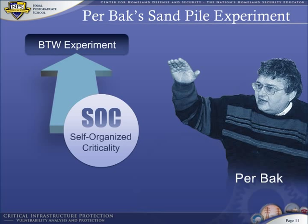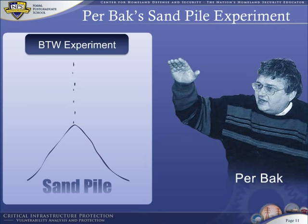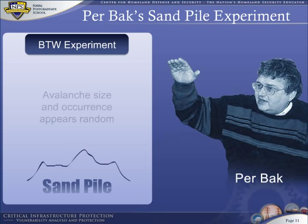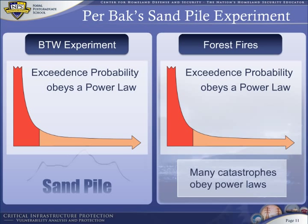Bak and associates proposed a simple sand pile experiment: consider a pile of sand built up over time by simply dropping grains of sand onto a pile. At first, the sand pile simply builds up into a cone shape. Grains continue to pile up until avalanches begin to occur. These avalanches are of various sizes and appear to occur at random — Bak was unable to predict when an avalanche might occur. Per Bak could not predict the timing or size of avalanches, but he showed that the exceedance probability of avalanches obeys a power law, just like the exceedance probability of our forest fires. Many catastrophes obey power laws, and the BTW experiment is no different.